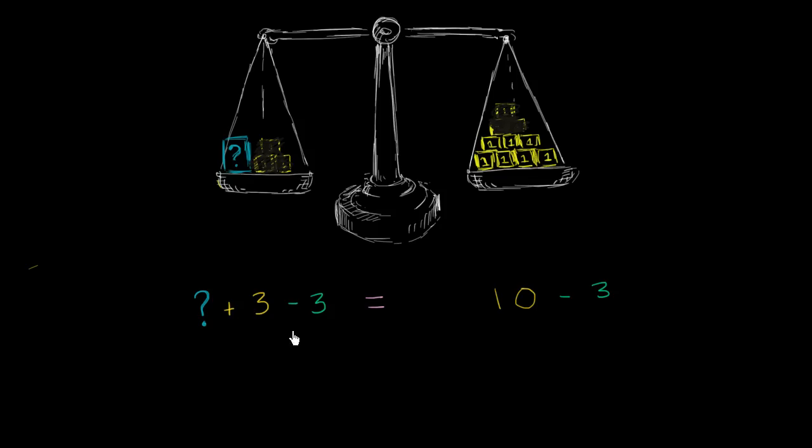So on the left-hand side, what are we left with? Just like over here, we're left with just the question mark. 3 minus 3 is 0. So on the left-hand side, we're left with just the question mark. And on the right-hand side, we're left with 10 minus 3, which is 7. And we get the exact same result. Question mark is equal to 7. And if we're dealing with kilograms, then this is 7 kilograms.